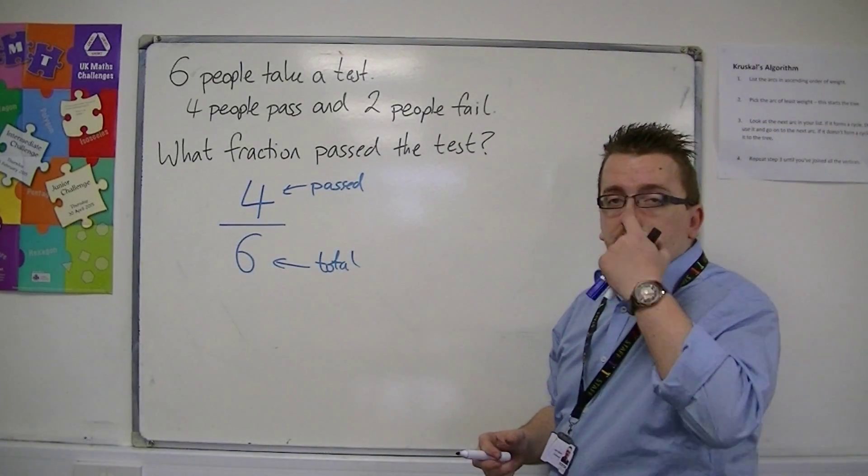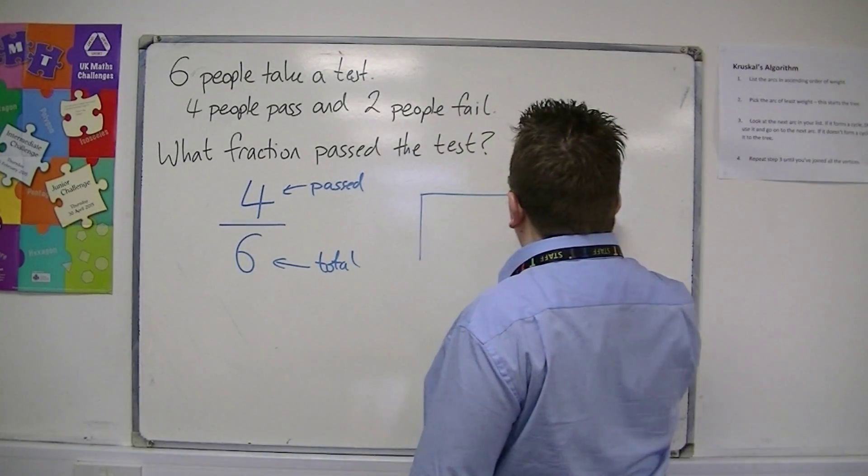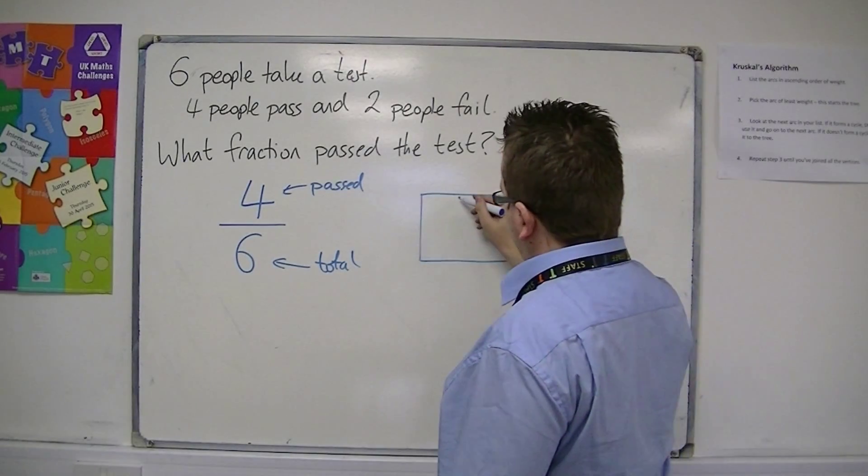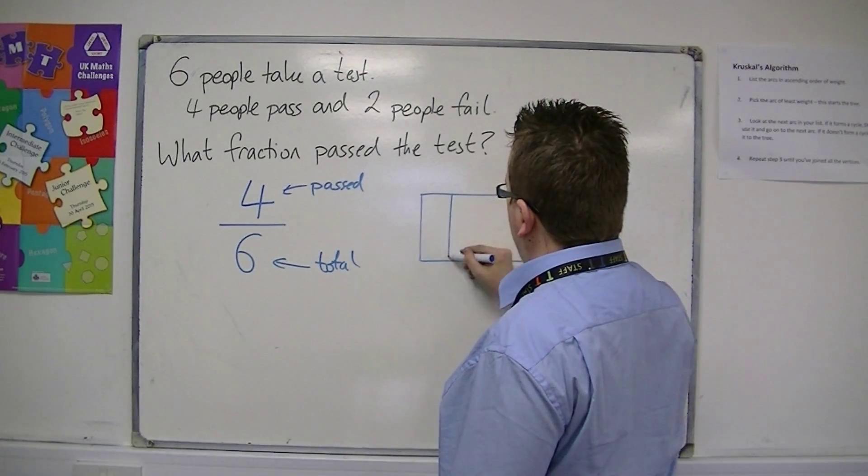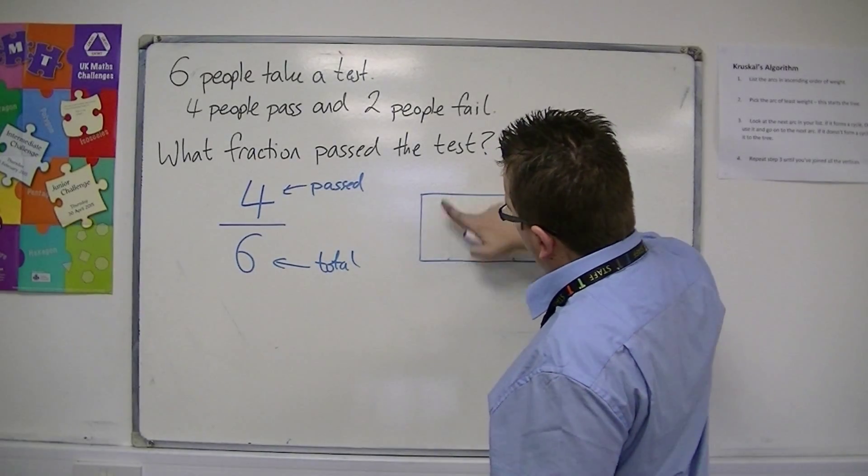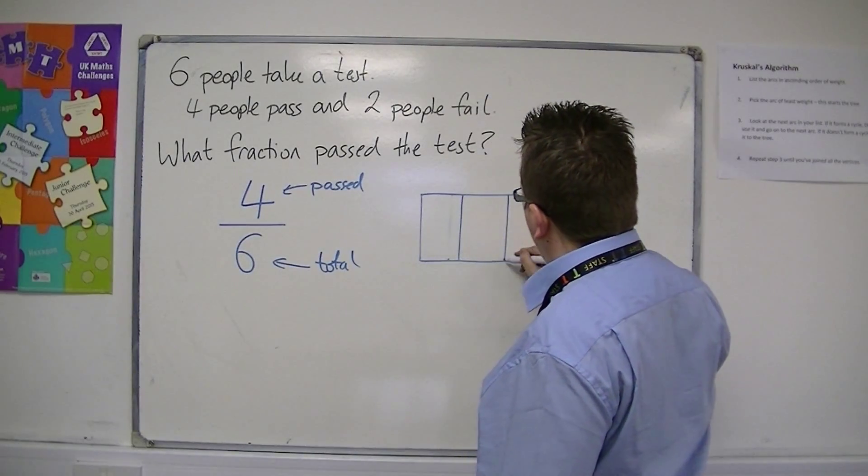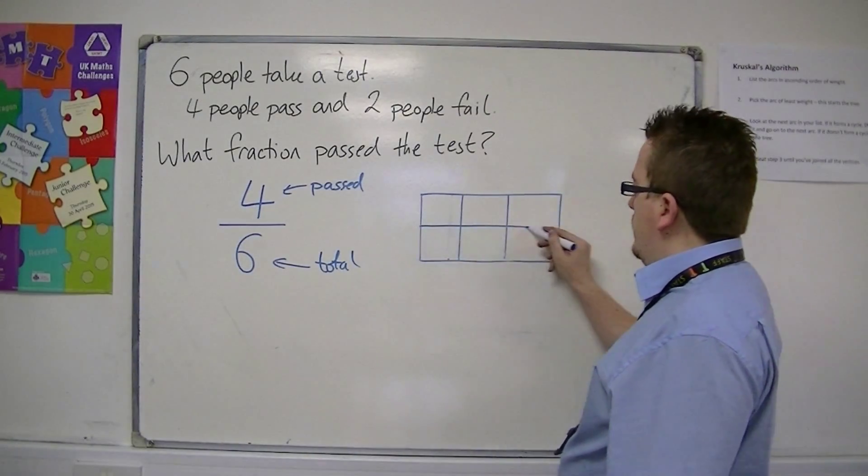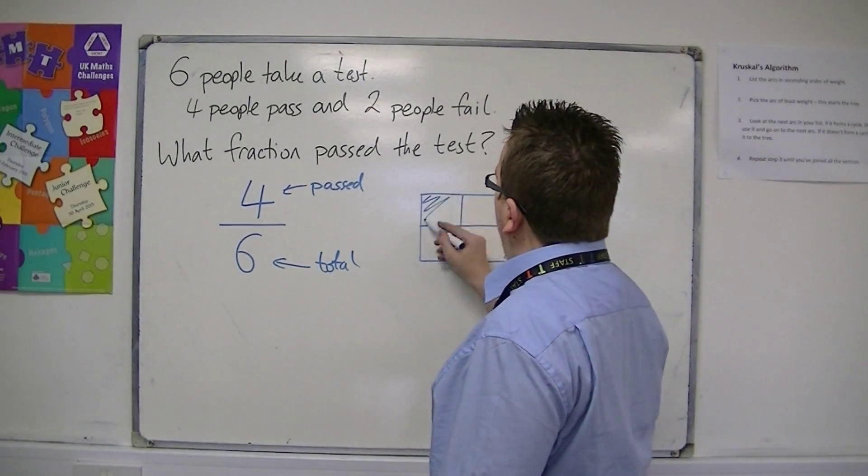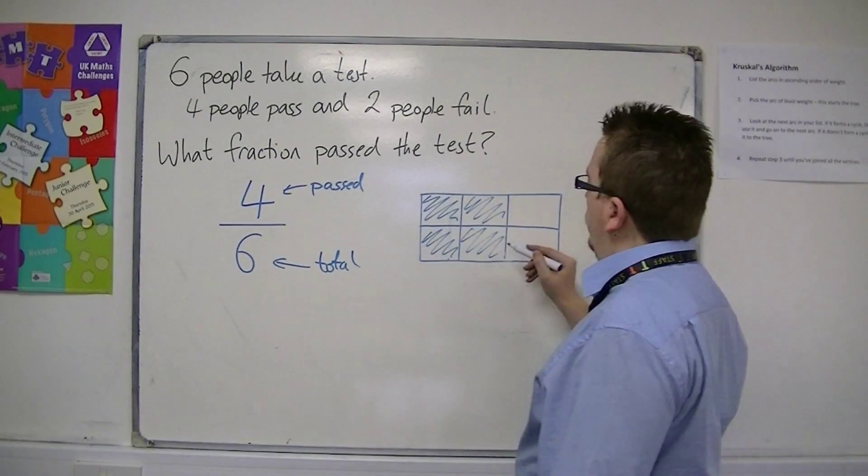This can be represented graphically. So you can represent it in many different ways with shapes. So we could split this up, haven't done that very well, let's try that again, one, two, three, like that, and then draw a line. So then we can say that we've got four out of the six.